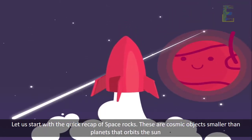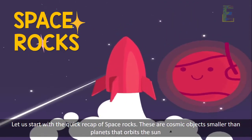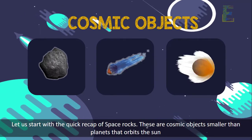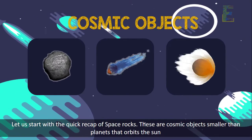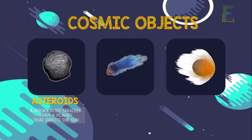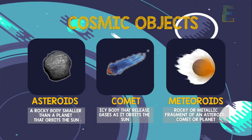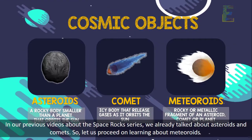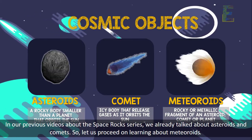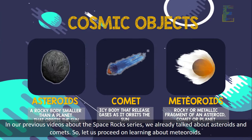Let us start with a quick recap of Space Rocks. These are cosmic objects smaller than planets that orbit the Sun. These are asteroids, comets, and meteoroids. In our previous videos about the Space Rocks series, we already talked about asteroids and comets.